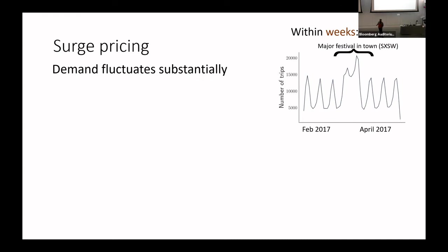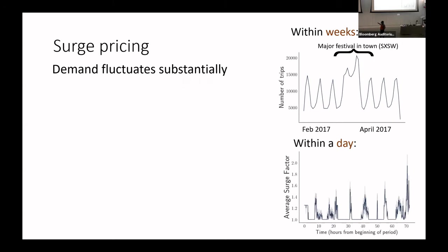Then South by Southwest came into town, so they saw an extended peak week for about a week and a half, especially over that weekend. But it's not just fluctuating substantially across weeks — it's also fluctuating quite substantially within a day. This is a proxy of demand — the surge factor — over a three-day period. Even within an hour, surge is fluctuating quite substantially, and it's partially predictable. There will be rush hours, but there are also spikes that are less predictable.